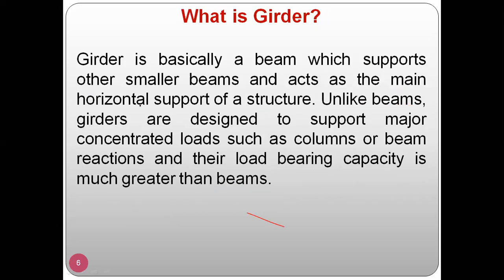A girder is basically a beam which supports other smaller beams and acts as the main horizontal support of the structure. Unlike a beam which just supports the roof system, a girder supports beams placed in its lateral direction. Unlike beams, girders are designed to support major concentrated loads such as columns and beams. The load-bearing capacity of a girder is much higher than a beam.